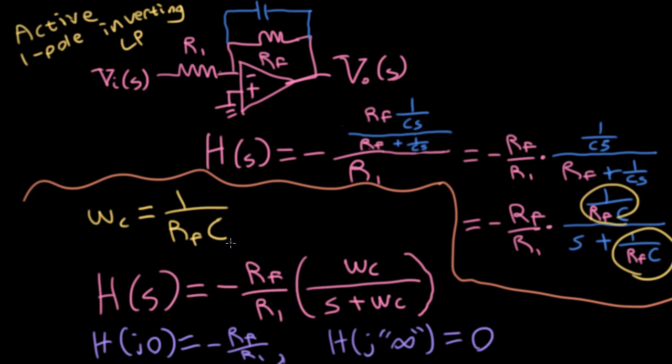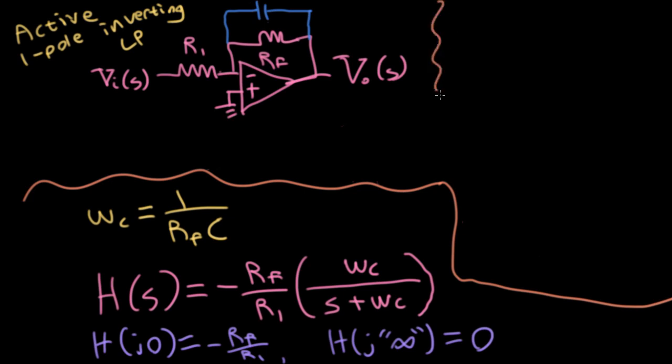If I ask a question like, what is the gain at DC? So like in the passive case, when we plugged in j0 for S, we would wind up with the omega C's canceling. And here we would wind up with just minus RF over R1. And then at infinity, it still goes to zero. So we now have a one pole filter. It's inverting. But now we can set the DC gain by choosing RF over R1. And in particular, once we've chosen RF from choosing RF and C, the feedback resistance and the capacitor to get the half power cutoff point we want, we can then choose R1 to get whatever gain we want.